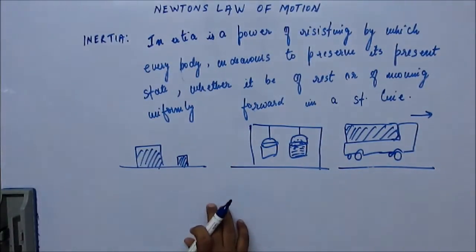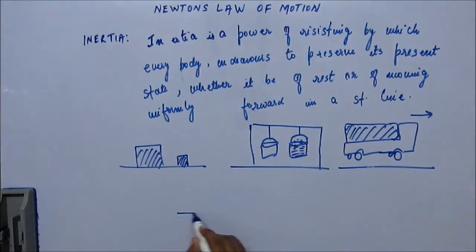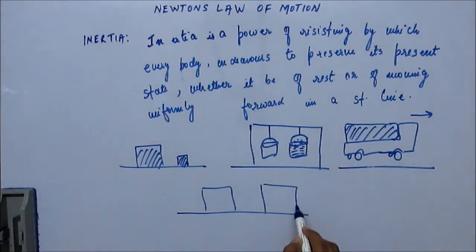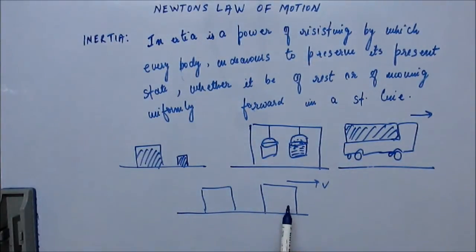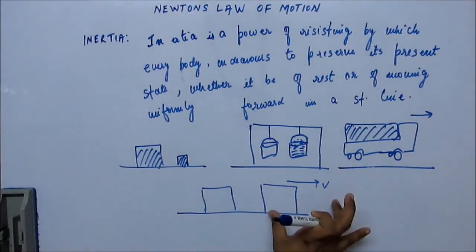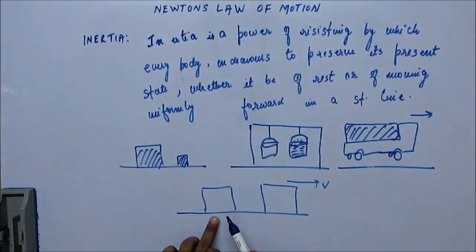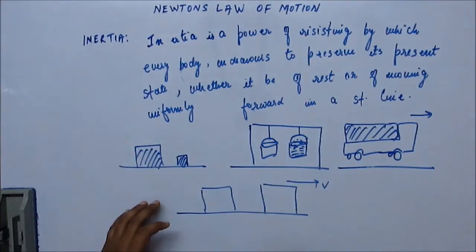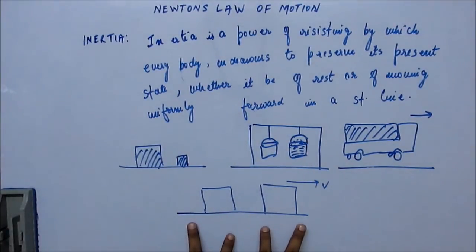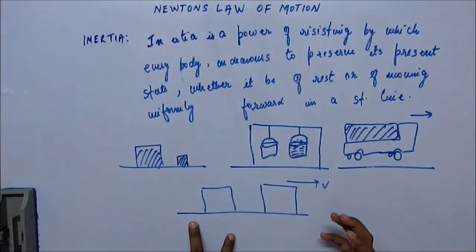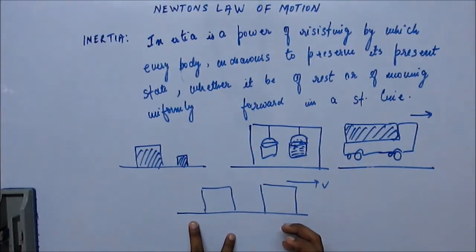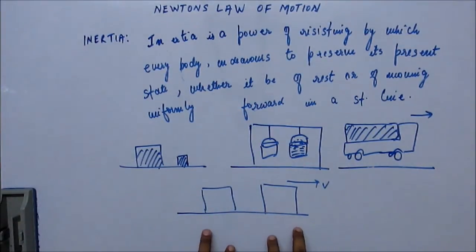Inertia depends on mass only — it does not depend on velocity. For example, consider two blocks of the same mass: one is moving with a certain velocity and another is at rest. Both will have the same inertia. To stop the moving block you have to apply a certain force, and to bring the resting block into motion you also have to apply some force. So inertia works both ways — how difficult it is to stop a moving block, and how difficult it is to set a resting block in motion. This depends on mass, not velocity.